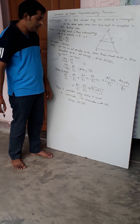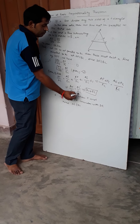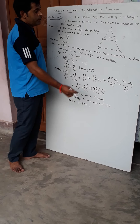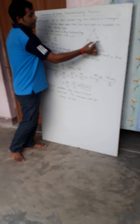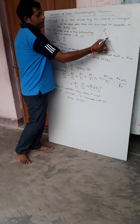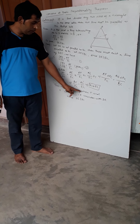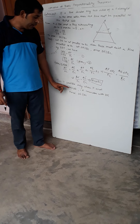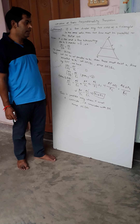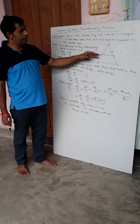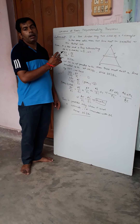AC can be cancelled from both numerators, giving FC equals EC. This is only possible when F and E coincide — that is, when F and C are the same point. Therefore, DE is parallel to BC. This proves the Converse of the BPT theorem.